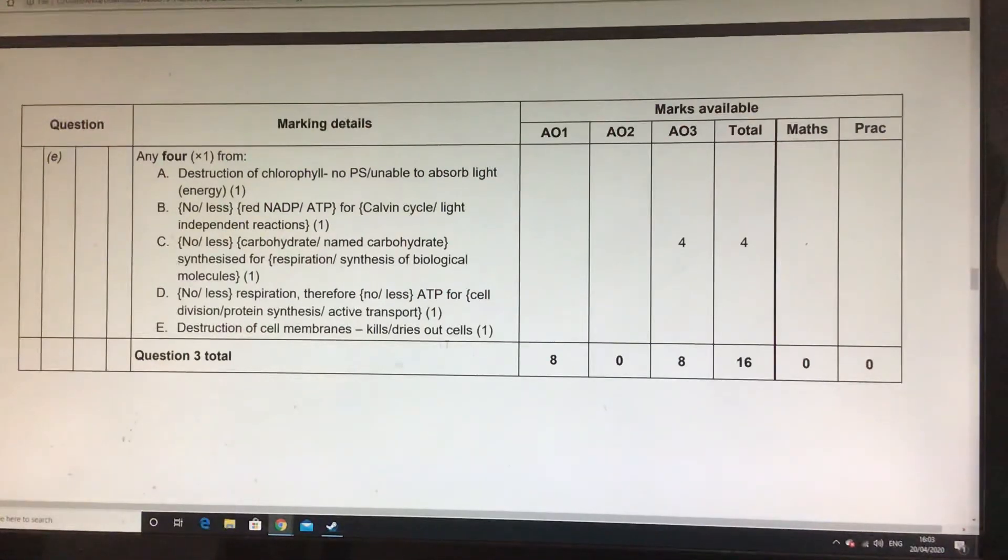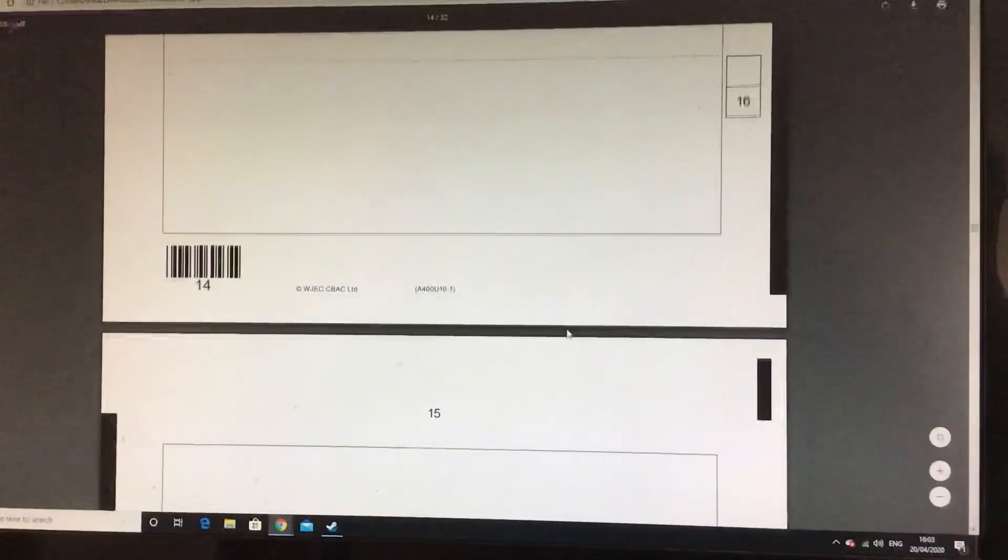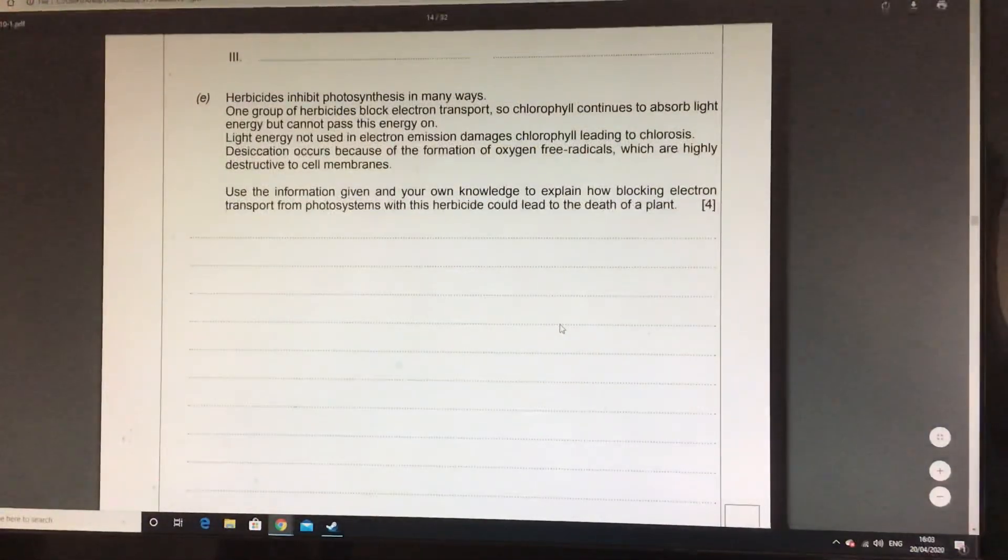And the cell membranes will dry out because with no active transport, your roots don't work at all. So that was something that was mentioned by some of you. Right, that was the last one of question three.